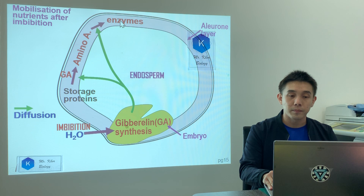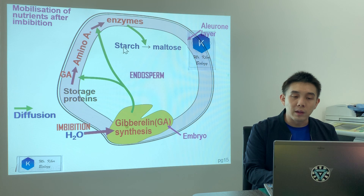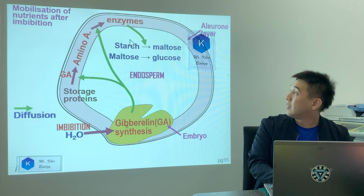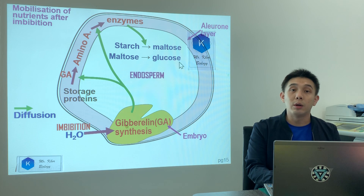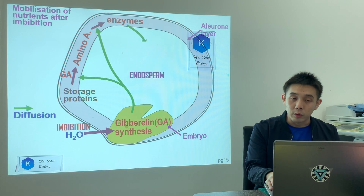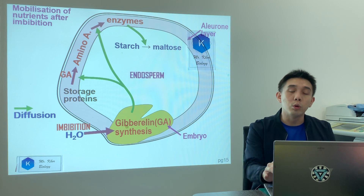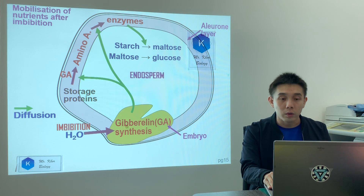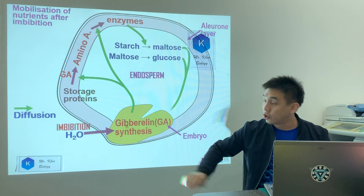An example enzyme is amylase, which breaks down starch to maltose. Maltose can then be broken down to glucose. So enzymes are produced — for example, amylase breaks down starch to maltose, and maltose is further broken down to glucose. This glucose can then be used to synthesize energy.